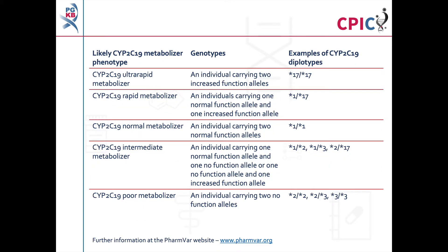There are currently over 30 defined alleles of CYP2C19, known as star alleles. Star alleles are characterized by their rate of function relative to the star 1 allele, which is designated as a normal function allele. Diplotypes of CYP2C19 star alleles can be assigned to a metabolizer phenotype, as shown in this table and in table 1 of the guideline. Note that as more evidence becomes available, new star alleles can be added and the functional definition of some star alleles may change.